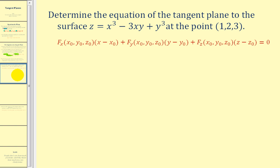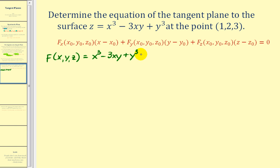We want to determine the equation of the tangent plane to the surface at the given point. The first thing we need to do is write an equation for F(x,y,z), which is equal to x³ − 3xy + y³ − z = 0. We evaluate at the point (1, 2, 3).